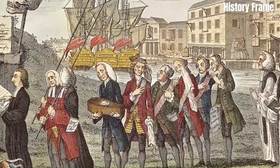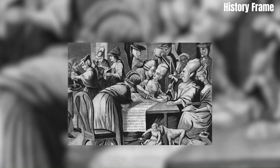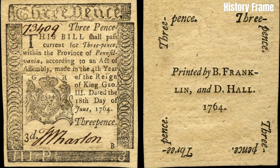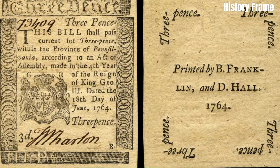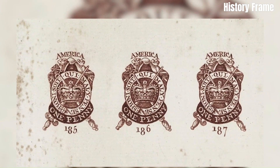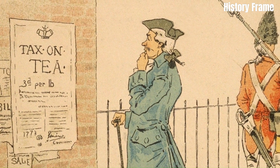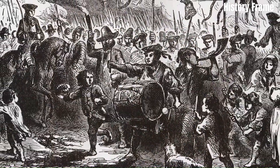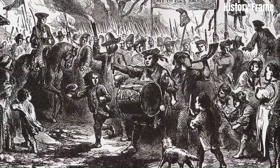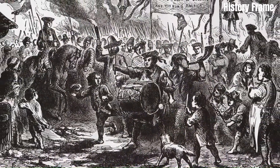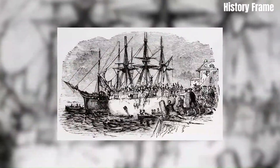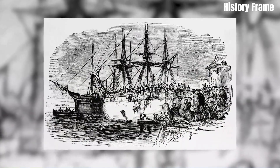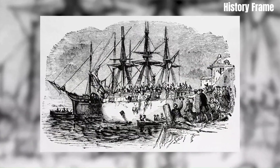One of the key events that sparked the revolution was the imposition of various taxes by the British government, including the Sugar Act, Stamp Act, and Townsend Acts. These acts were seen as unfair and unjust by the colonists, who believed that they were being taxed without representation in the British Parliament. The rallying cry of "no taxation without representation" became a central theme of the revolution.